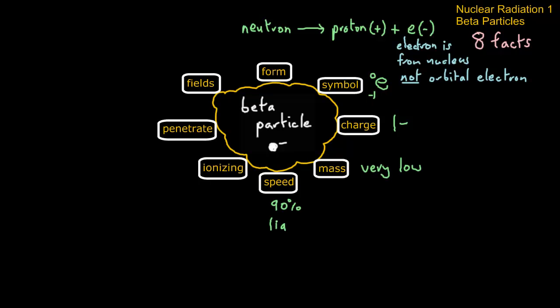The speed is about 90% of the speed of light, so quite a lot faster than the alpha particle. And because it's not got a lot of mass, it's fairly weak ionizing.